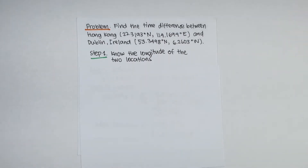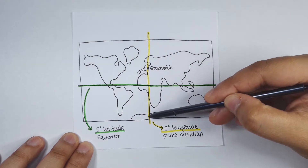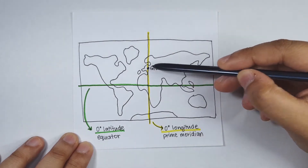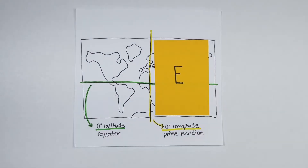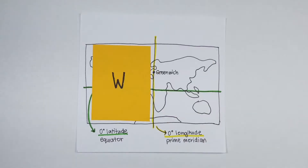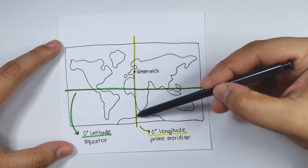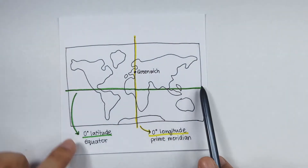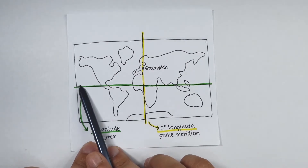Step number one is to know the longitudes of the two locations. Quick recap: longitude is the imaginary vertical line at the prime meridian where Greenwich, England is located, defined to be zero degrees. To the right of the prime meridian is east, while to the left is west — from zero to 180 degrees east, and zero to 180 degrees west.